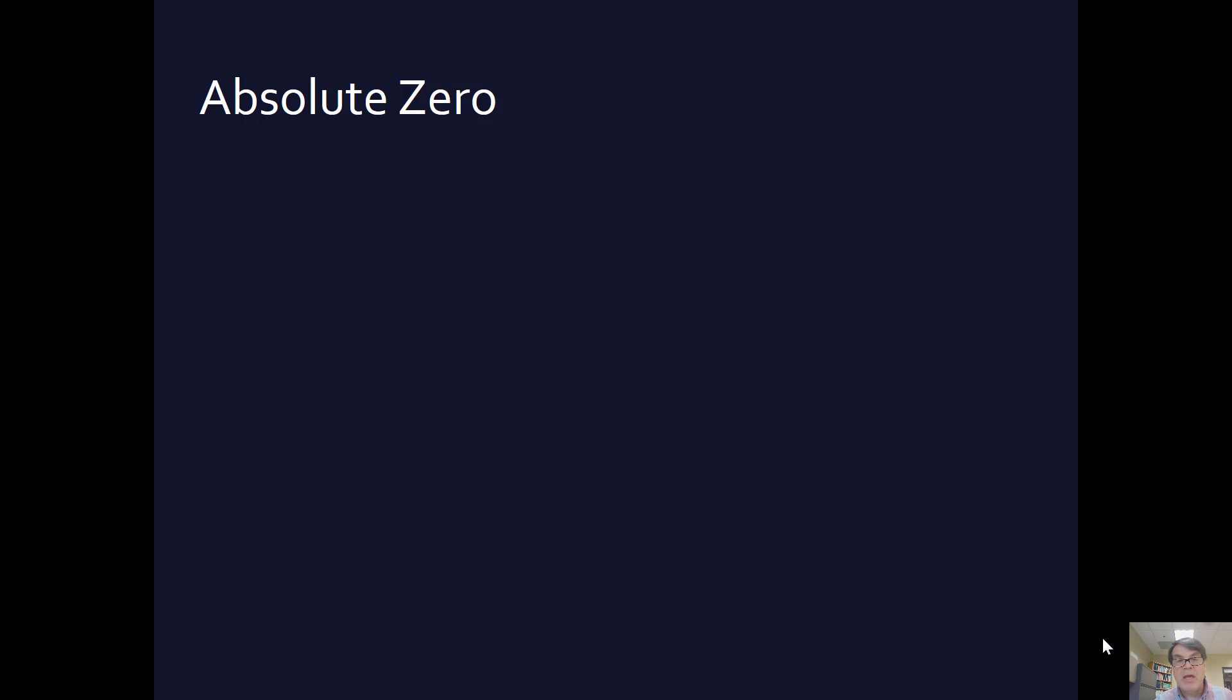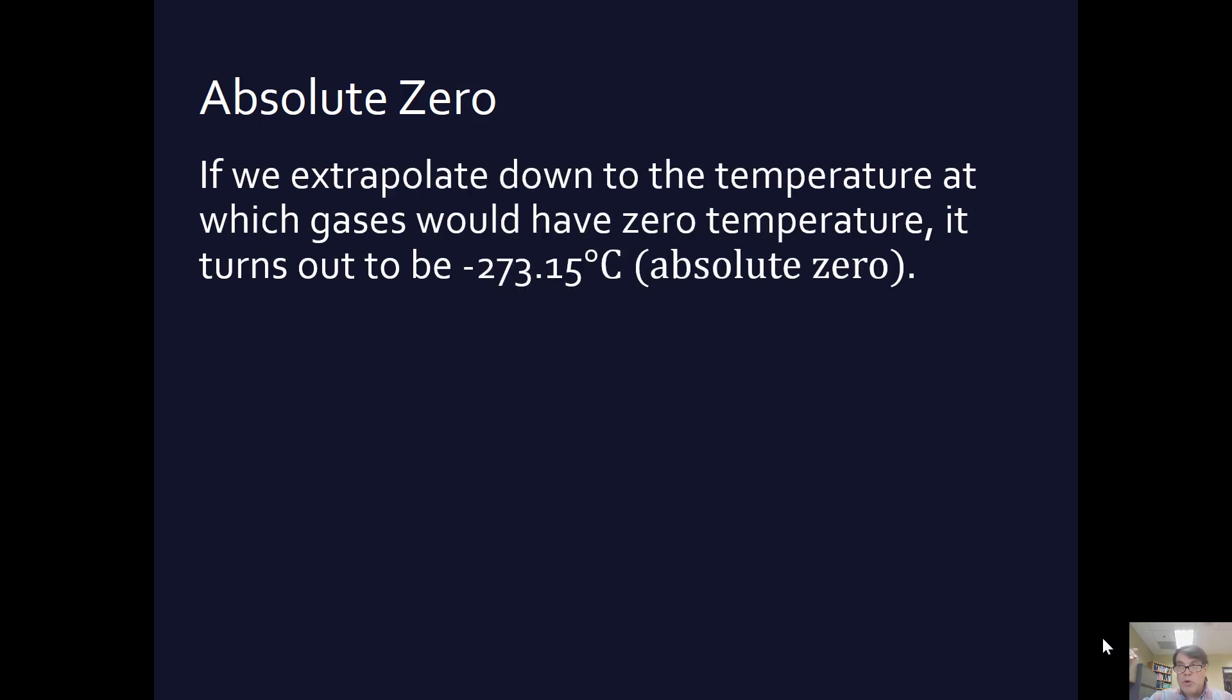So absolute zero. You can graph how pressure and temperature relate to each other for water or for carbon dioxide or for some other substance. And so what happens is, these are all lines because it's a direct relationship, but if you extrapolate back all of these different substances,